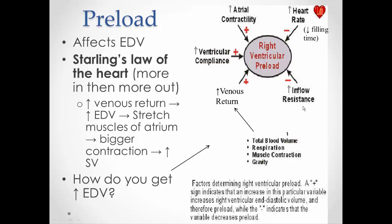The other negative would be increased inflow resistance. If there's something preventing the blood from entering the heart — an increase in resistance to flow, maybe a really high hematocrit or constriction of the veins leading to the heart — that would have a negative effect on preload because I would not be able to increase end diastolic volume if I can't get the blood into the heart. So all of these play a role in dealing with preload: some having positive effects increasing end diastolic volume, others having a negative effect. Remember that if we increase preload, we increase stroke volume, and if we increase stroke volume, we increase cardiac output.